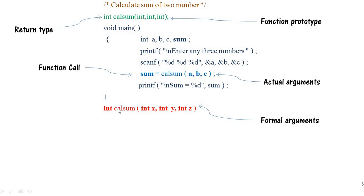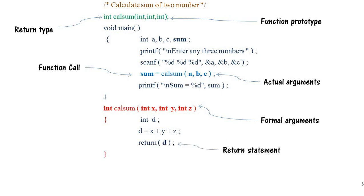The scope of the formal arguments is within the function. For example, if `a` is 10, then `a`'s value is stored in `x`; if `b` is 20, it is stored in `y`; if `c` is 30, it is stored in `z`. You must be careful about the ordering of arguments. Inside the function I declare a variable `d`, where `d = x + y + z`. The actual arguments pass through the formal arguments, we perform the calculation, and then there is the return statement: `return d`.